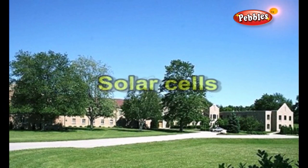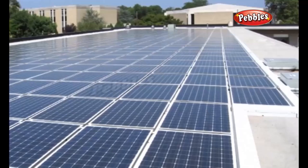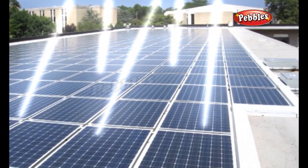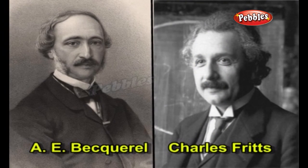Solar Cells. A solar cell or photovoltaic cell is a large area electronic device that converts solar energy into electricity by the photovoltaic effect. The photovoltaic effect was first recognized in 1839 by French physicist A.E. Becquerel. However, it was not until 1883 that the first solar cell was built by Charles Fritz.